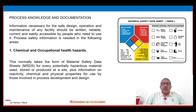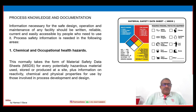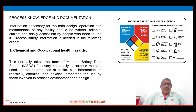Process knowledge and documentation: information necessary for safe design, operation and maintenance of any facility should be written, reliable, current and easily accessible by people who need to use it. Process safety information is needed in the following areas, and in each area it should be written, reliable, simple to read and understand.